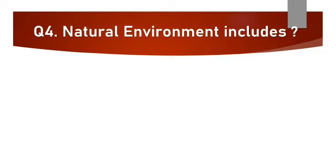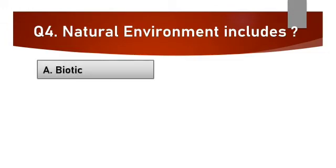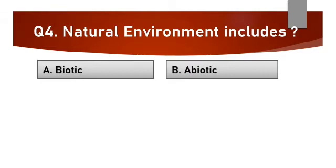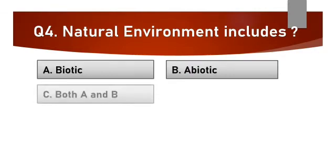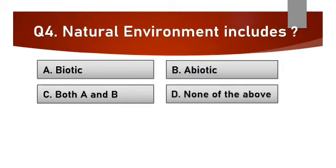Question number 4. Natural environment includes: A. Biotic, B. Abiotic, C. Both A and B, or D. None of the above.